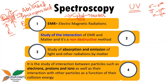In the same way, we have IR absorption spectroscopy. IR radiations have some energy, and when they are passed through the sample, they result in the bending and stretching vibrations of the atomic bonds. This helps us understand what functional groups are present in the molecule.